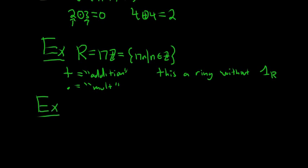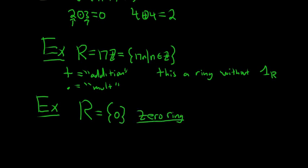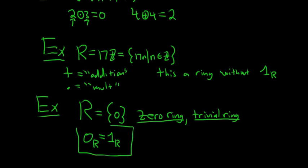Another example: let R equal the set containing just zero. This is called the zero ring, or the trivial ring. It is a ring under addition and multiplication. In this ring, zero equals one — which is pretty freaky. The trivial ring often appears as an oddball exception in theorems.